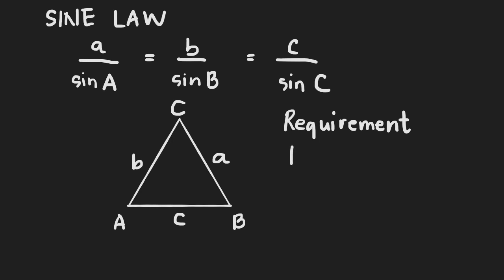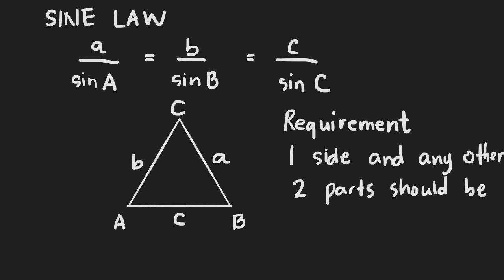At least one side and any other two parts should be given. To solve a triangle, one side and any other two parts should be given. There are six parts of the triangle - three angles and three sides. So to solve this triangle, we need three given parts. Of those three parts, at least one should be a side.